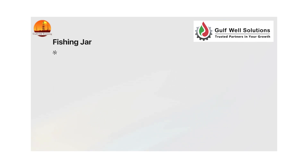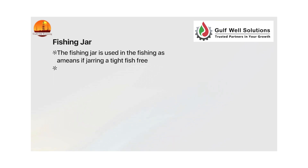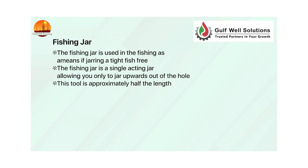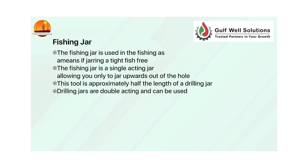Fishing jar: the fishing jar is used in fishing as a means of jarring a tight fish free. The fishing jar is a single-acting jar allowing you only to jar upwards out of the hole. This tool is approximately half the length of a drilling jar. Drilling jars are double-acting and can be used to jar up and jar down.